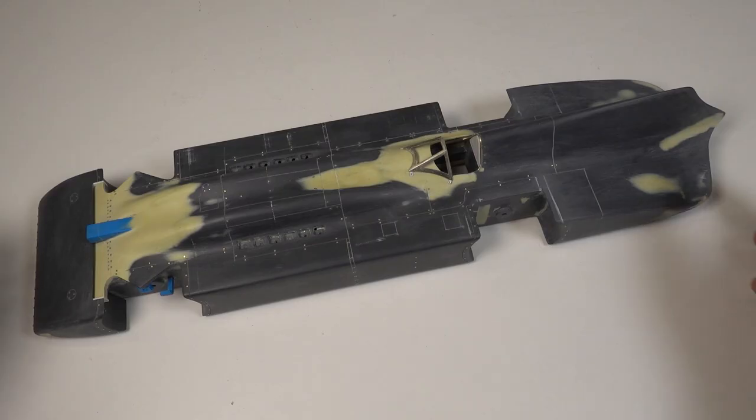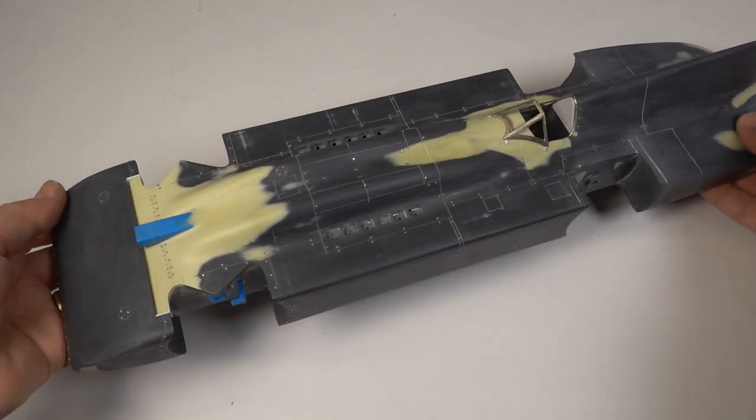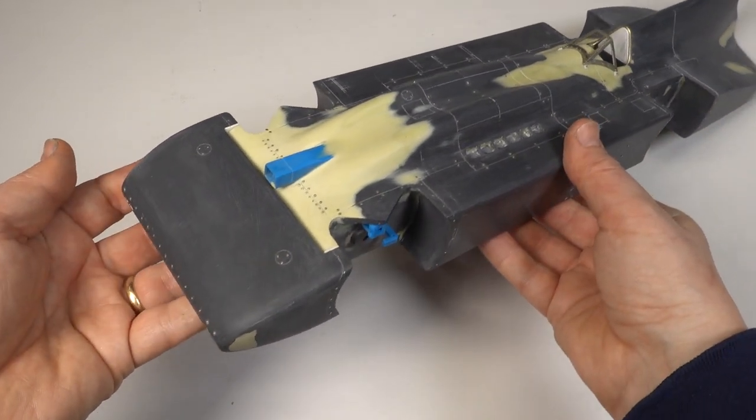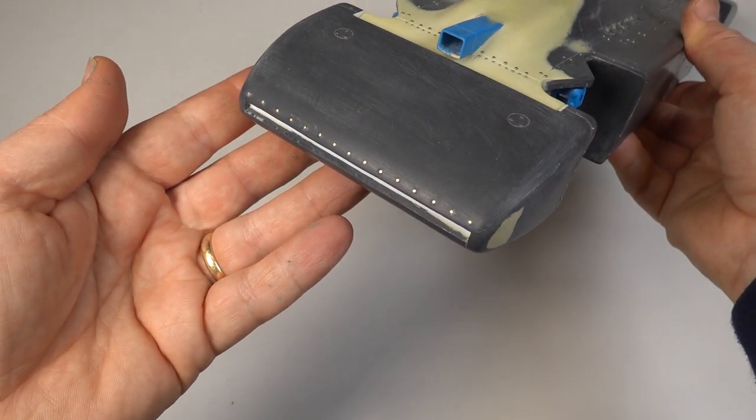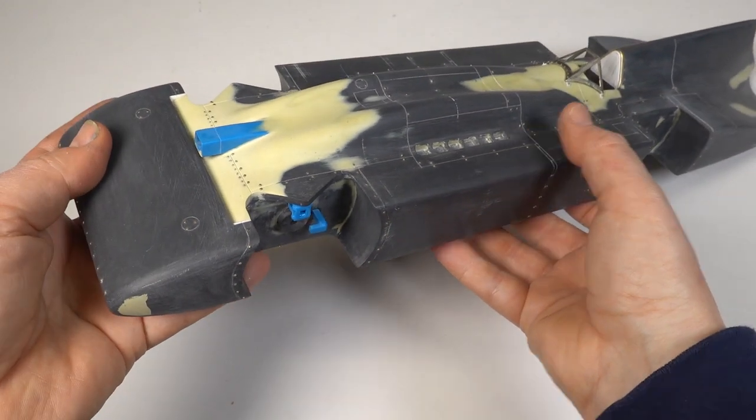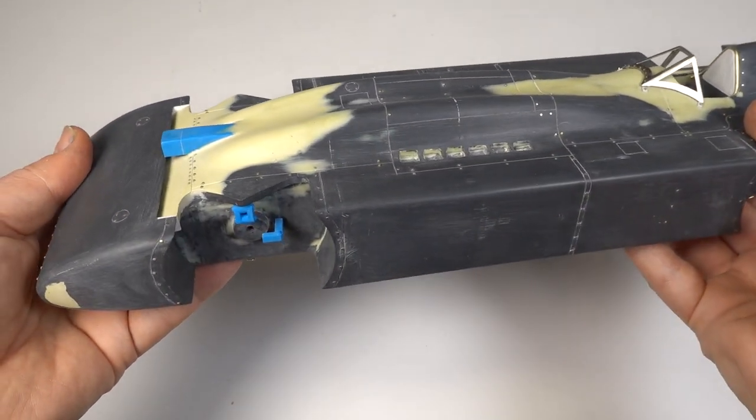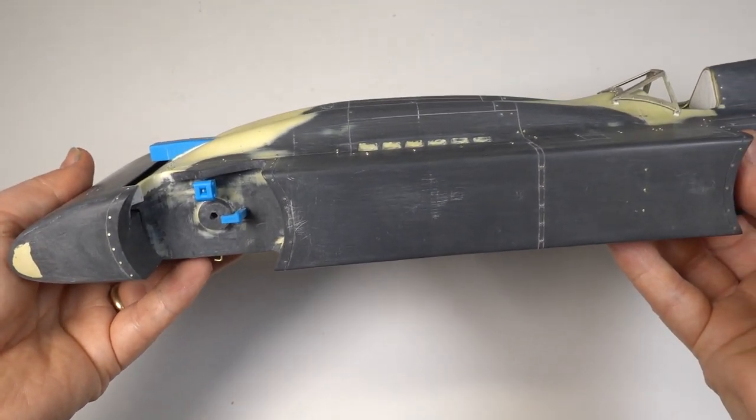I began by cutting out the radiator intake in the nose and then marked out the panel lines before carefully scribing them in. Fortunately the photos I took at Goodwood were really useful and helped me draw in the panel lines with a fine marker and position all of the fasteners for the bodywork.